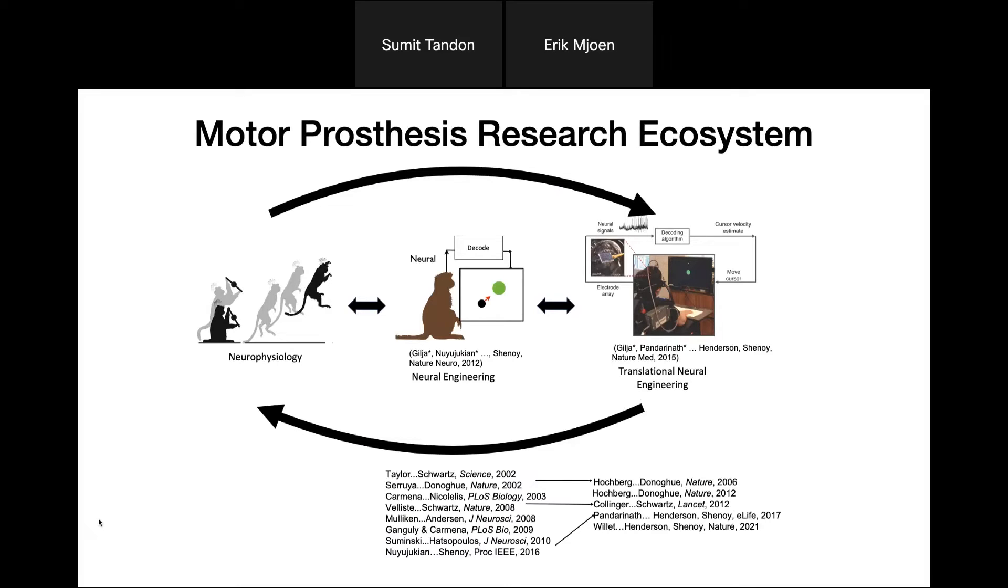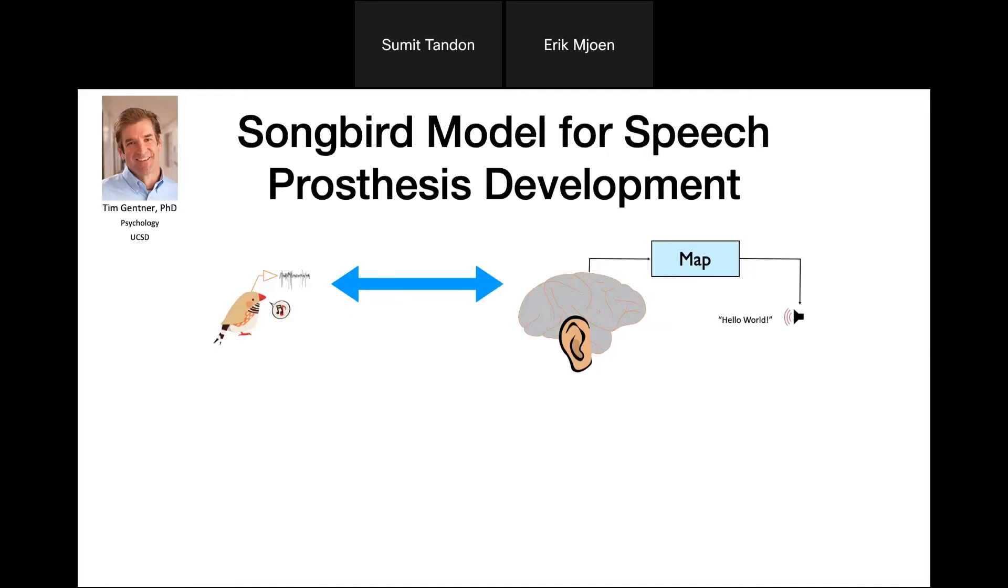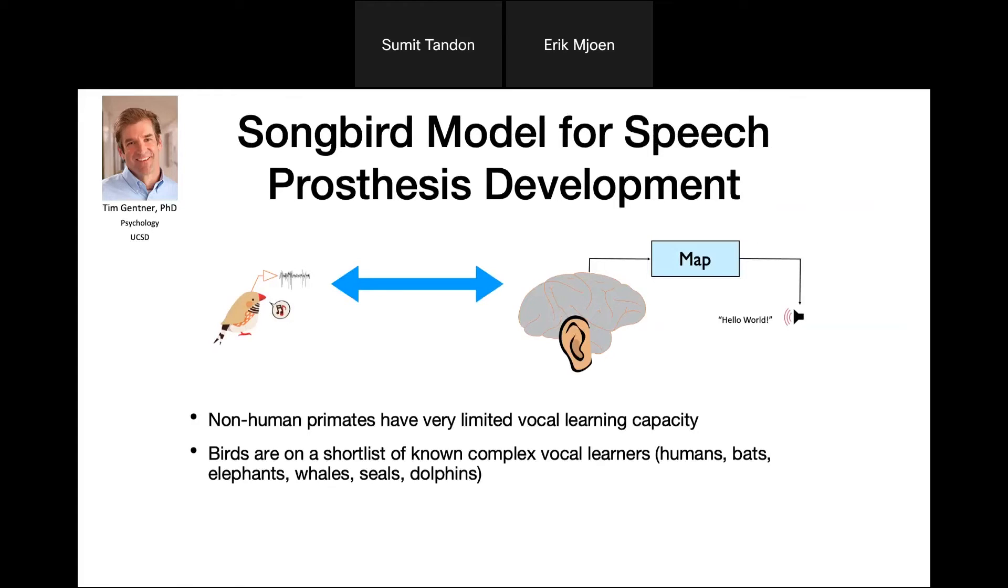Unfortunately, you might look at this and say, why not go ahead and use this same animal model for speech? Unfortunately, monkeys are very limited in their vocal communication abilities, and there's a very short list of vocal communicators with greater complexity. So we've turned to the songbird model as an analogous system. The reason why we're working with songbirds is they're on this short list of complex vocal learners. Other options are humans, bats, elephants, whales, seals, and dolphins.